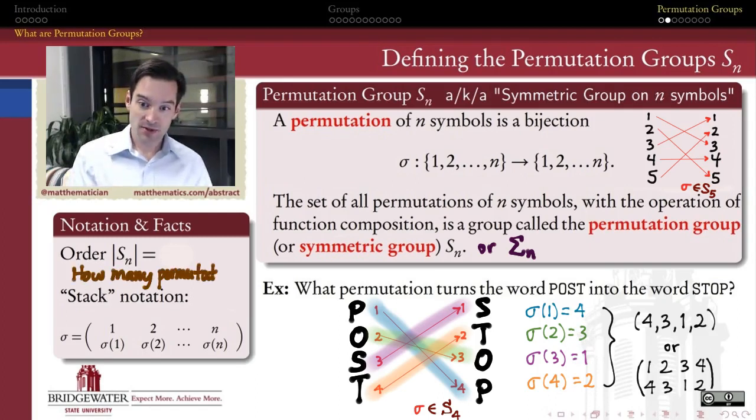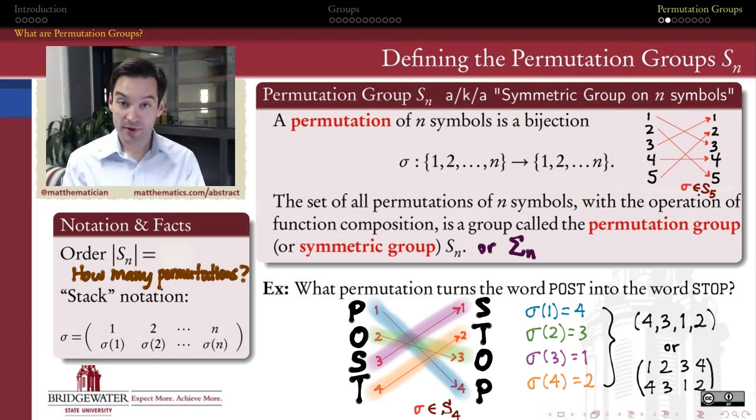Before we talk about cycle notation, an important question to ask if we're going to study permutations in abstract algebra is: how many permutations are there? How large are these groups of permutations of n symbols?